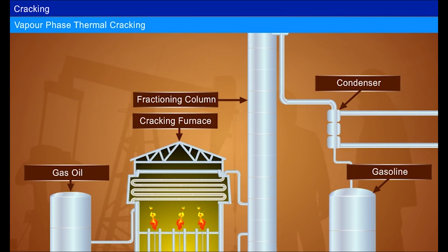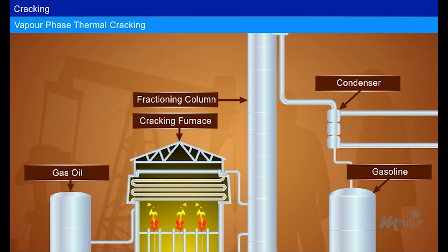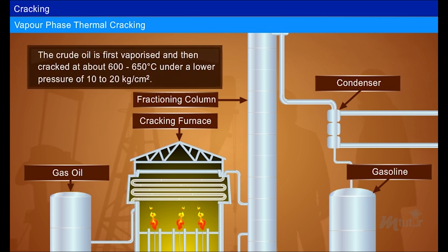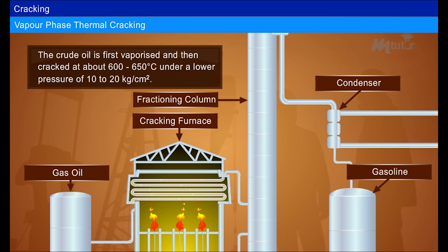Vapor phase thermal cracking: this type of cracking is suitable for oils which may be readily vaporized. The crude oil is first vaporized and then cracked at about 600 to 650 degrees Celsius under a low pressure of 10 to 20 kilograms per centimeter square.